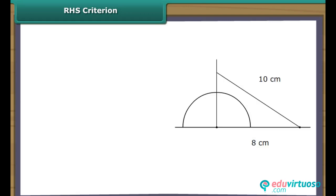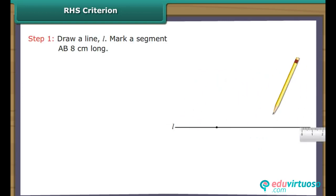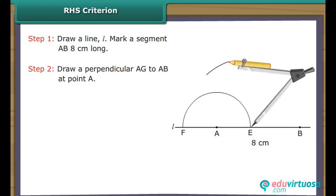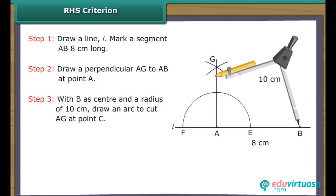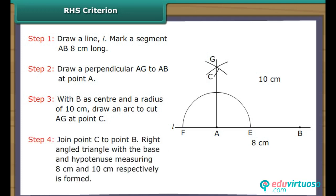RHS Criterion: Let us now draw a triangle, one of whose angles measures 90 degrees and the base and hypotenuse are 8 cm and 10 cm respectively. Draw a line L and mark a segment AB 8 cm long. Draw a perpendicular AG to AB at point A. With B as center and a radius of 10 cm, draw an arc to cut AG at point C. Join point C to point B. A right angled triangle with base and hypotenuse measuring 8 cm and 10 cm respectively is formed.